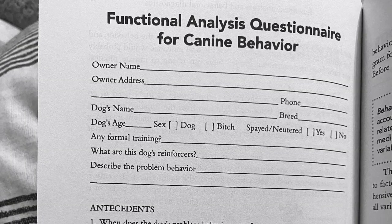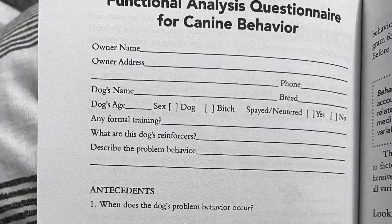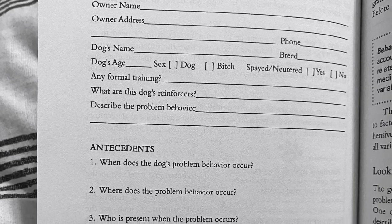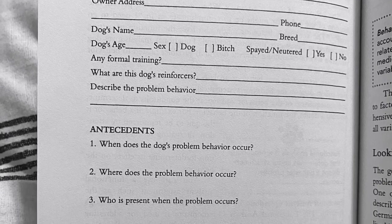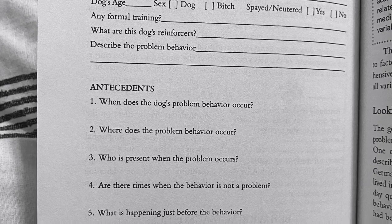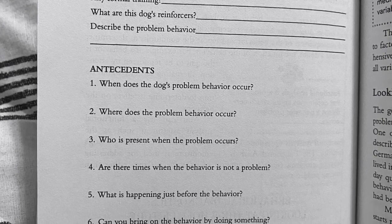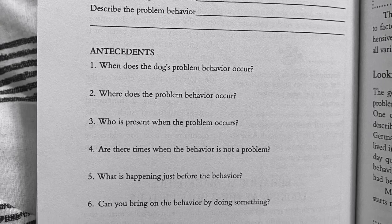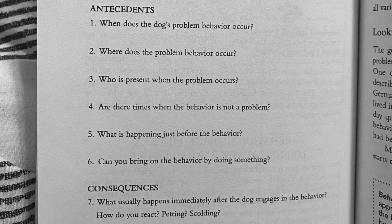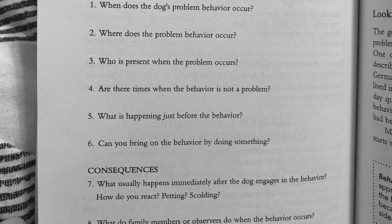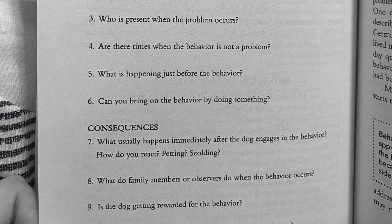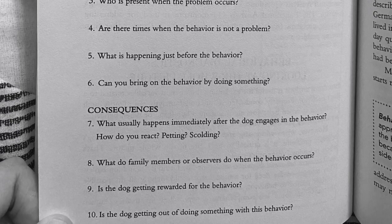The functional analysis questionnaire for canine behavior covers: owner's name, address, phone, dog's name, breed, age, sex, spayed or neutered status, any formal training, and the dog's reinforcers. Describe the problem behavior. Antecedents: When does the problem behavior occur? Where does it occur? Who was present? Are there times when the behavior is not a problem? What is happening just before the behavior? Can you bring on the behavior by doing something? Consequences: What usually happens immediately after the dog engages in the behavior? How do you react — petting, scolding? What do family members or observers do? Is the dog getting rewarded for the behavior? Is the dog getting out of doing something with this behavior?